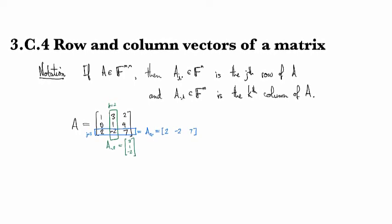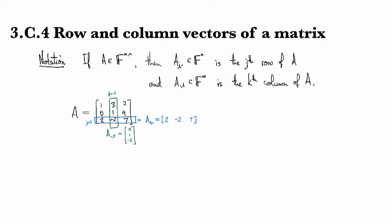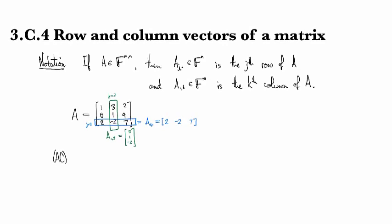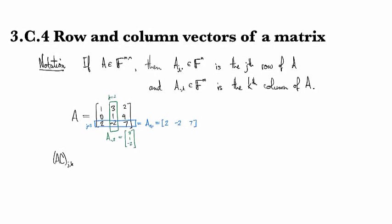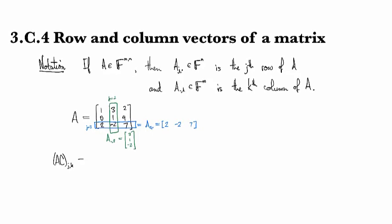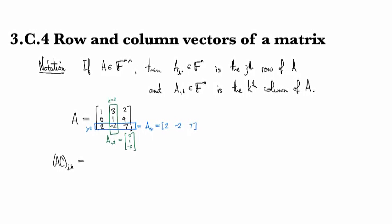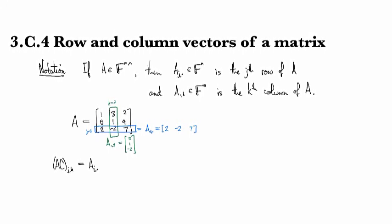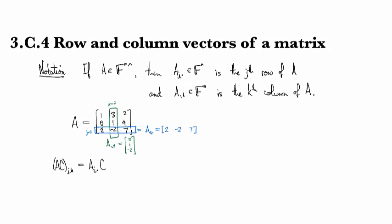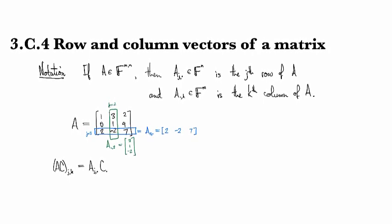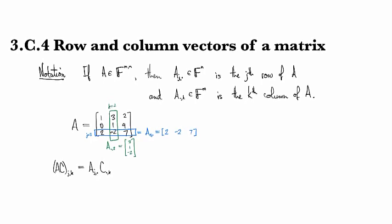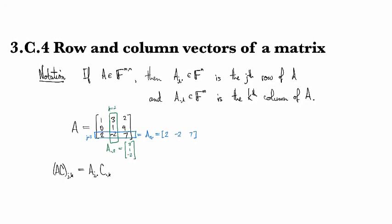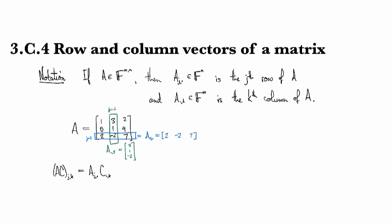Alright, if you go back now to the definition of matrix multiplication that we saw before, the fact that the jk'th entry is computed the way it is means it's the same thing as if we took the a_j,. vector and multiplied it against the c_.,k vector. You can think of that as a matrix product in and of itself, like a 1 by n matrix times an n by 1 matrix.